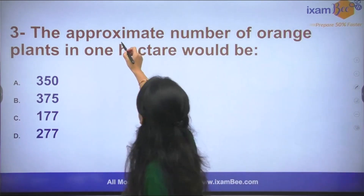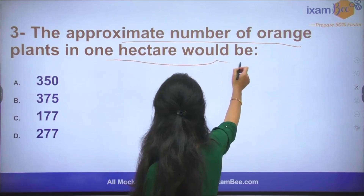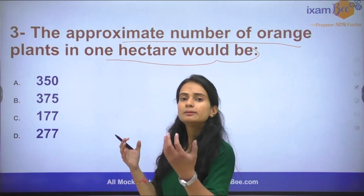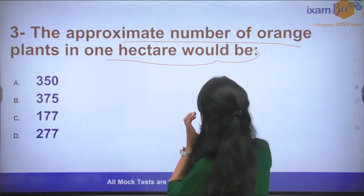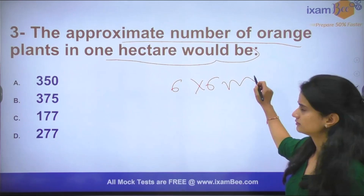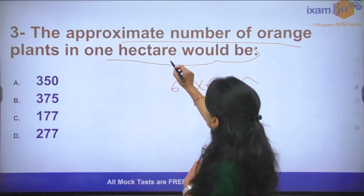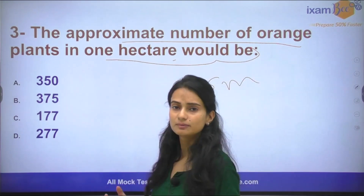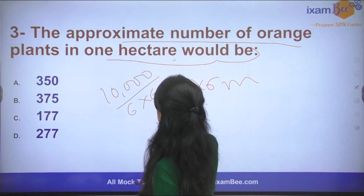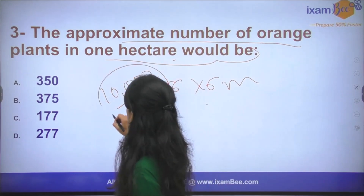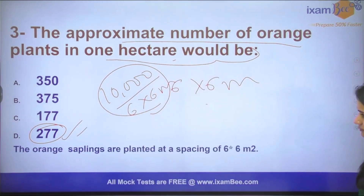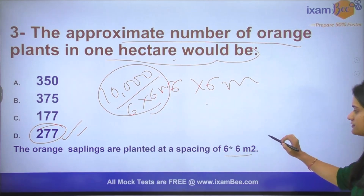The next question: The approximate number of orange plants in one hectare would be? To find the approximate number, we need to know the spacing for orange plants, which is 6×6 meters — row spacing and plant-to-plant spacing. To find out how many plants in one hectare, we divide 10,000 by 6×6 meters, which gives approximately 277. So the correct answer is 277. The orange plant is planted at a spacing of 6×6 meters.